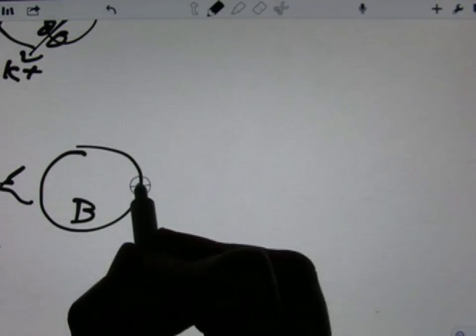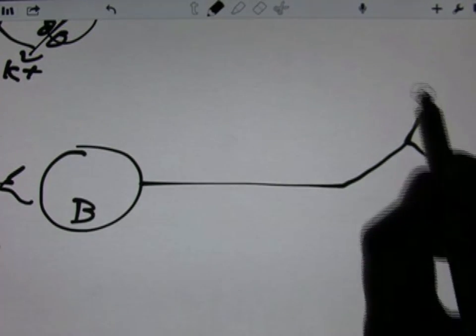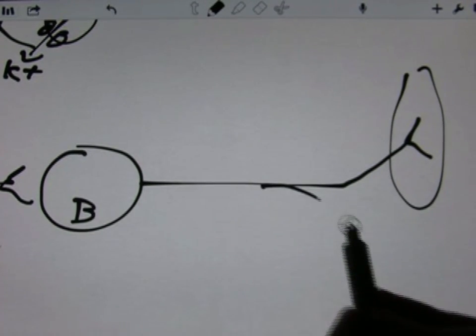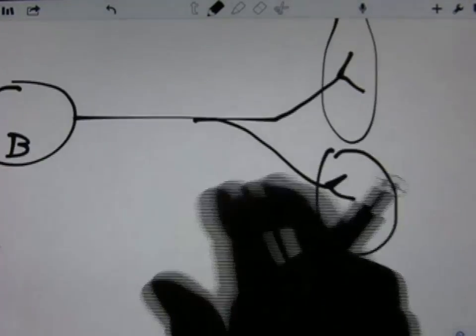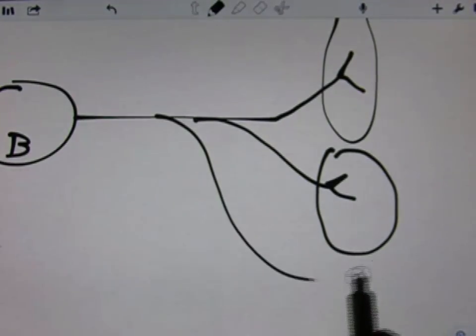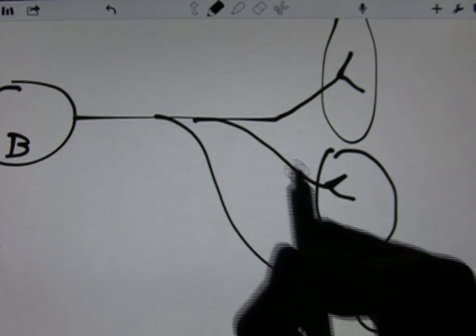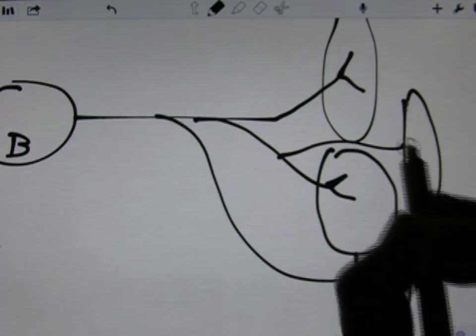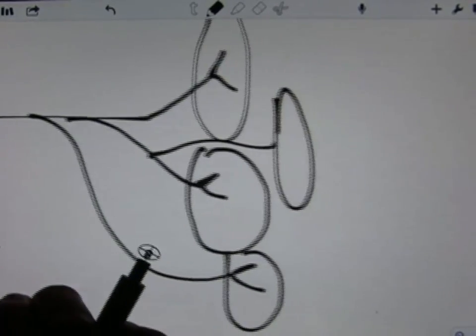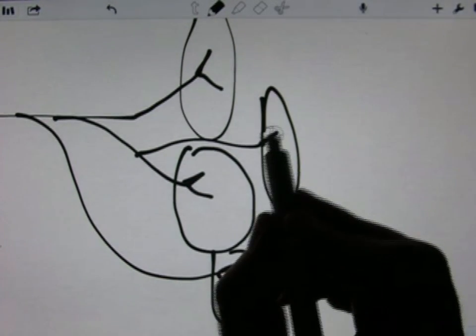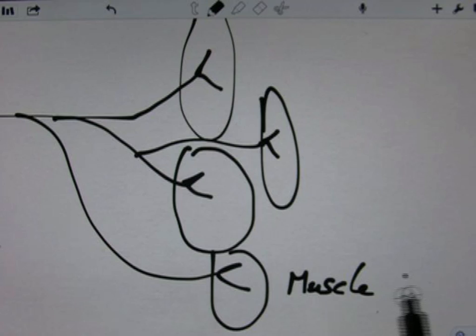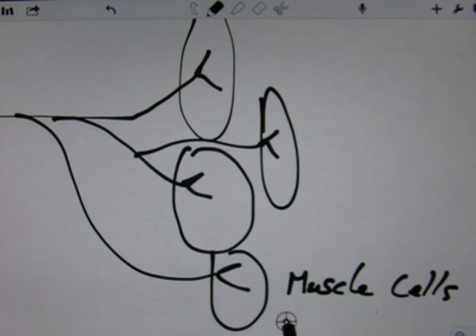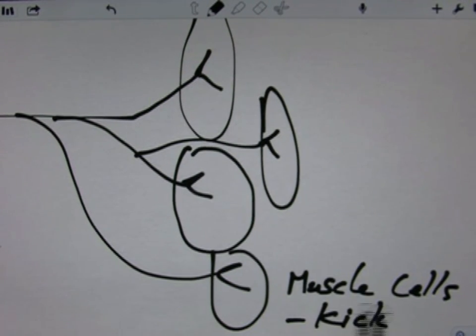And neuron B, we'd end in... Remember, this is excitatory. If I do these little open... So these are muscle cells that cause the kick.